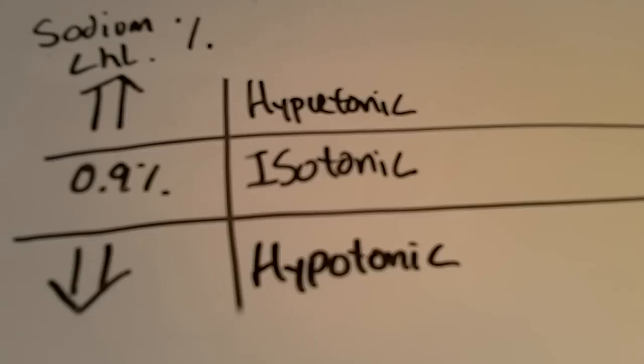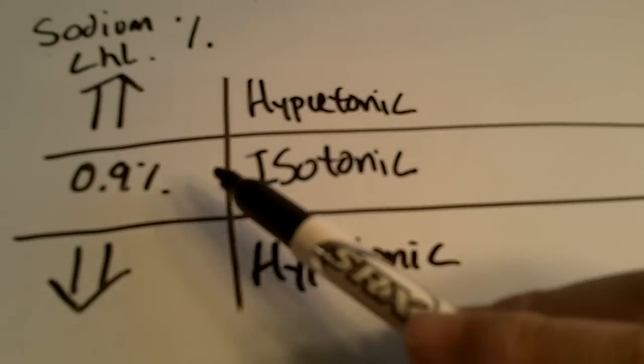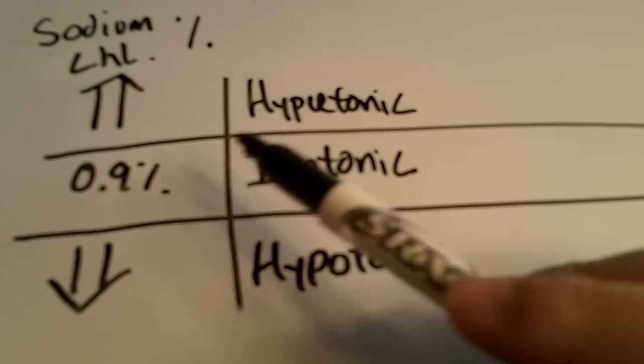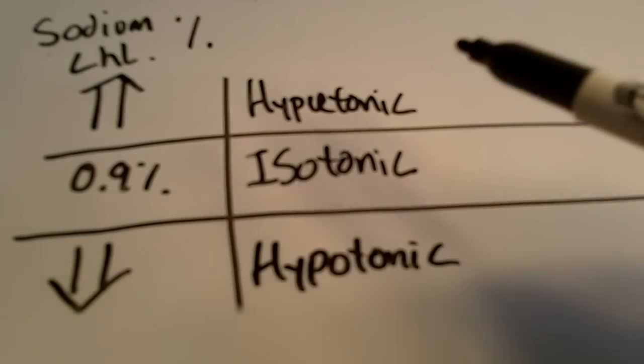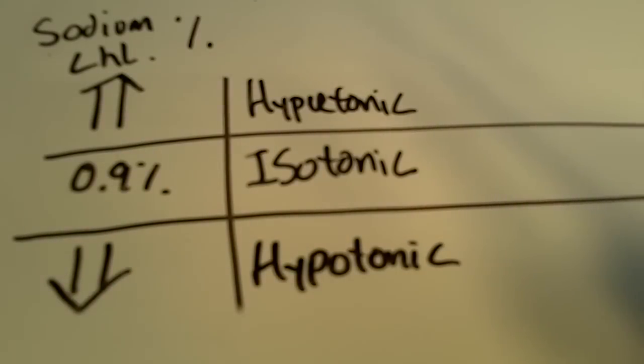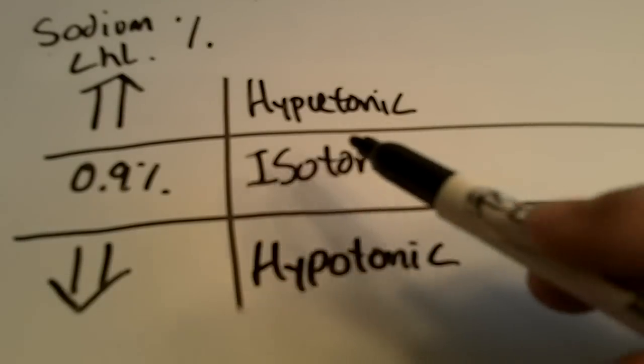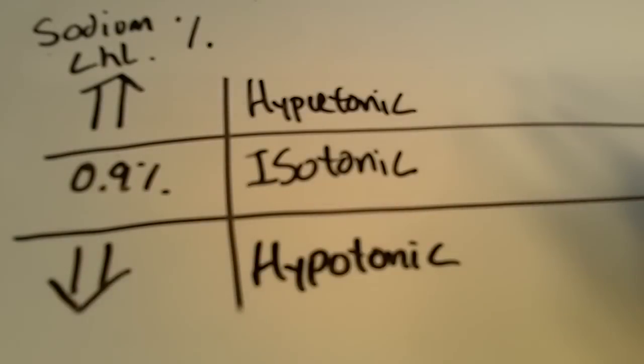And so, this is what you're going to need to remember. Pretty much it's easy. You just remember that isotonic is 0.9%. It's just barely less than 1% in a sodium chloride solution to be isotonic. And so, once you remember that.